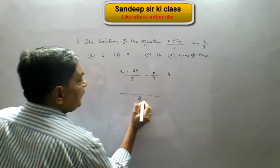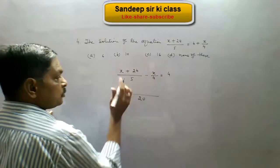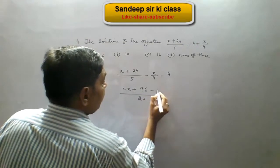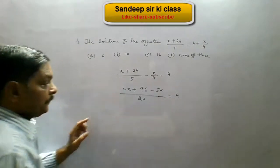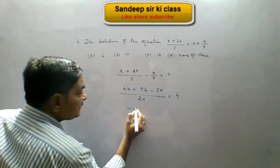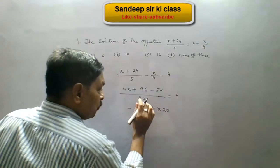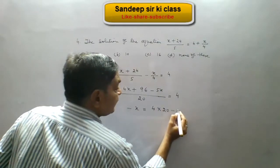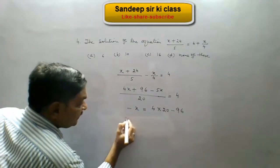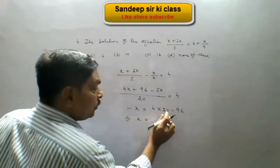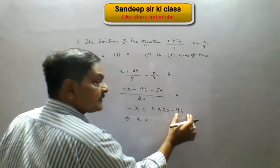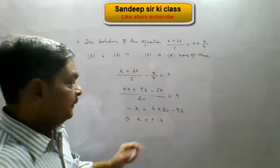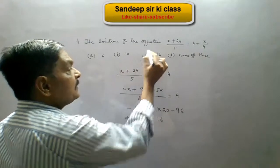The LCM will be 20. So 4 multiplies x plus 24 giving 4x plus 96, and 5 multiplies x giving minus 5x. This equals 4. Now 4x minus 5x is minus x, which equals 4 into 20 after cross multiplication. So minus x equals 80 minus 96, which is minus 16. Since minus is on both sides, x equals 16. Hence option C is correct.